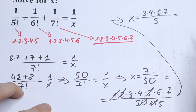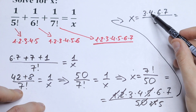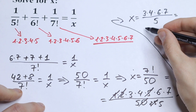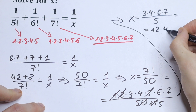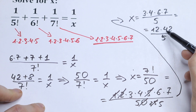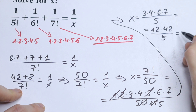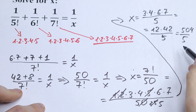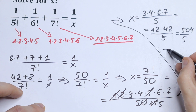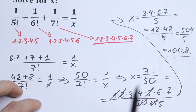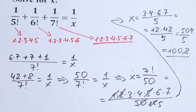Of course we can multiply this. We will have 3 times 4 is 12, times 6 is 72 — actually 12 times 42, which equals 504, all over 5. And if we need a decimal answer, it will be 100.8, and this is our answer.